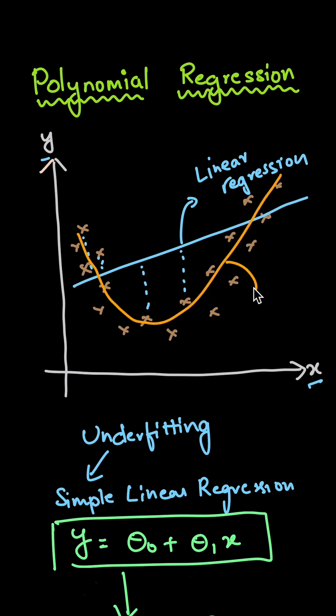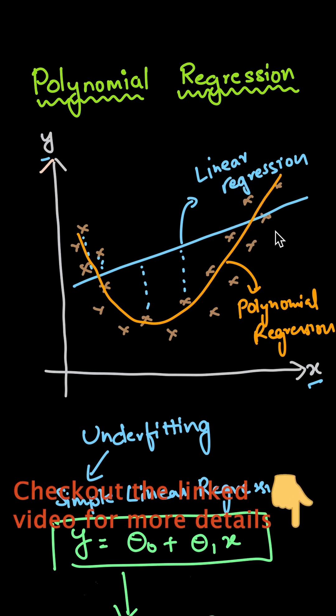So this is the hypothesis that we are getting with polynomial regression. And whereas with simple linear regression, we are getting a hypothesis something like a straight line. So obviously, this is working really good when compared to simple linear regression. That's why whenever the model is underfitting, we can go for polynomial regression. If you want more details, you can check out the linked video to this particular shot.